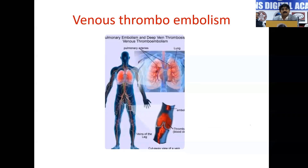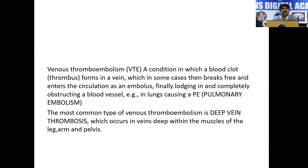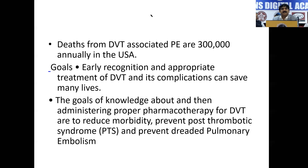Another most common complication during ICU stay is venous thromboembolism — a condition in which a blood clot forms in the vein and in some cases breaks free and enters into the circulation as an embolus, lodging in or completely obstructing blood vessels — causing deep vein thrombosis — or obstructing the pulmonary artery, causing pulmonary embolism. Death from DVT-associated pulmonary embolism is about 300,000 annually in America. The goals of DVT pharmacoprophylaxis are to reduce morbidity, prevent post-thrombotic syndrome, and prevent pulmonary embolism.